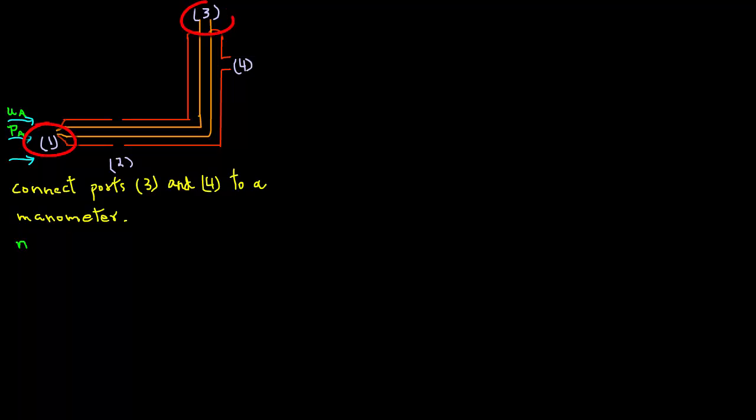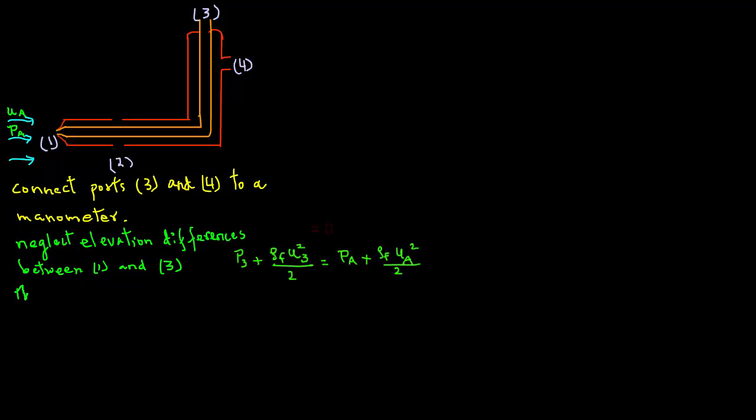If we neglect any elevation difference between locations 1 and 3, they are not that far apart so there won't be much elevation difference. Then, using Bernoulli equation, we can write P3, which is pressure at location 3, equals PA at location 1 plus rho F UA squared divided by 2.